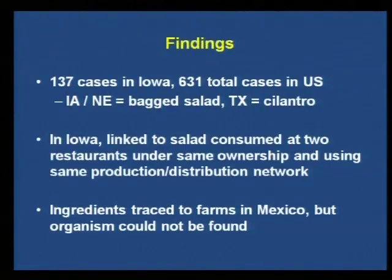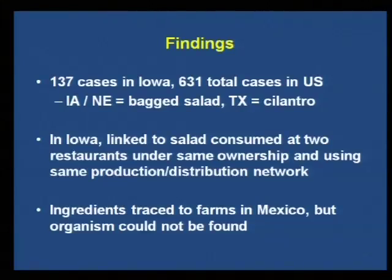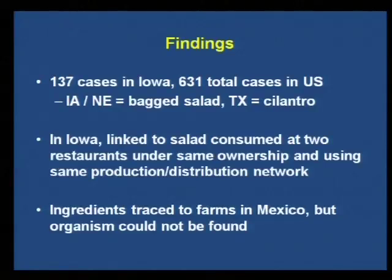We reached out to providers around the state, letting them know about cyclospora — symptoms, recommended treatment. Once providers tested patients who were already suffering diarrhea for months, treatment could drastically reduce the duration. And once patients tested positive, as a reportable disease, we could interview them, gather exposure information, and figure out the outbreak source. We ended up with 137 cases in Iowa and 631 total in the U.S. CDC suspects there were two separate outbreaks — in Texas it was linked to cilantro, and Iowa and Nebraska were linked to a bagged salad mix. The source farm was in Mexico, creating jurisdictional issues, and the organism was not ultimately found when tested.